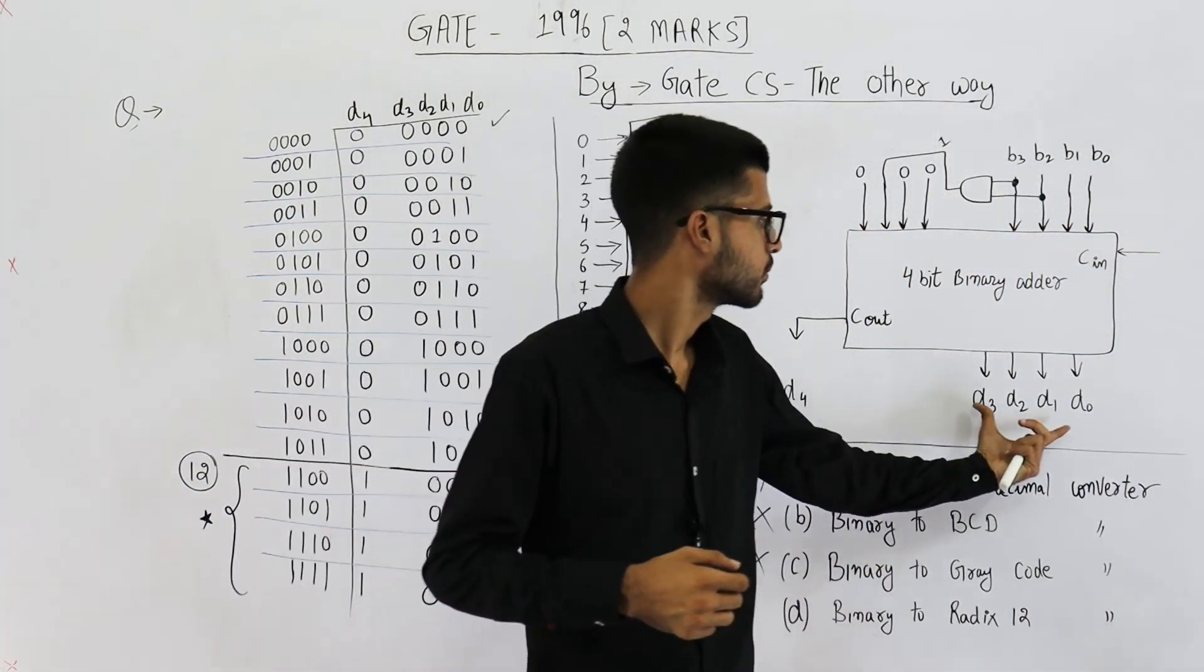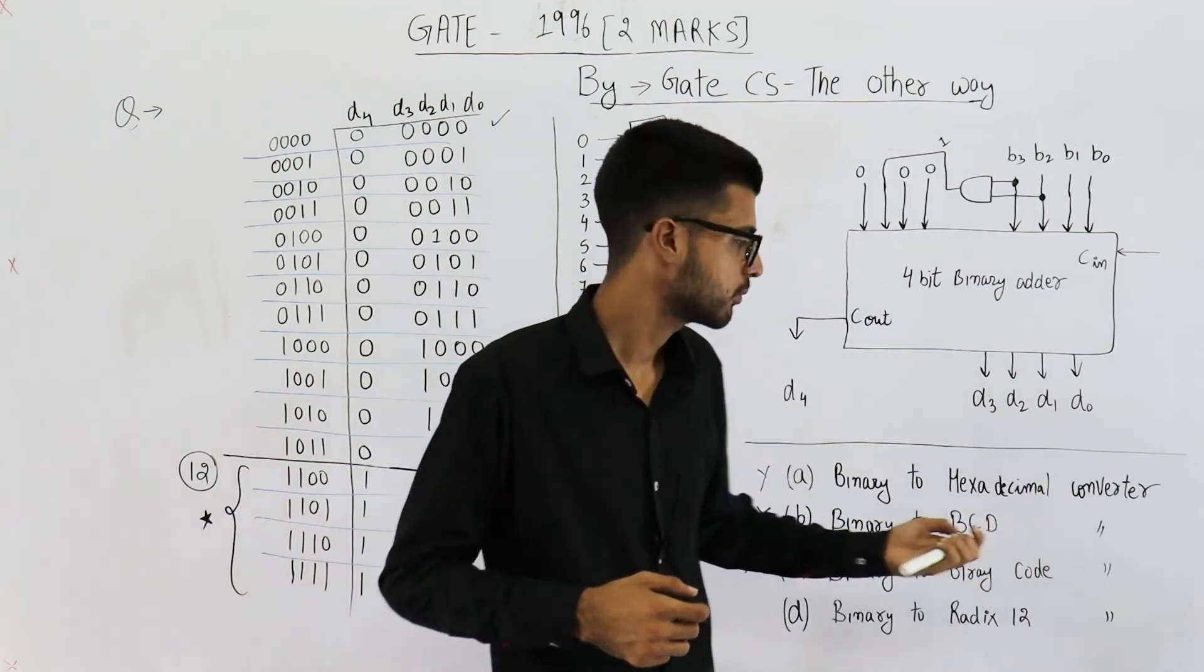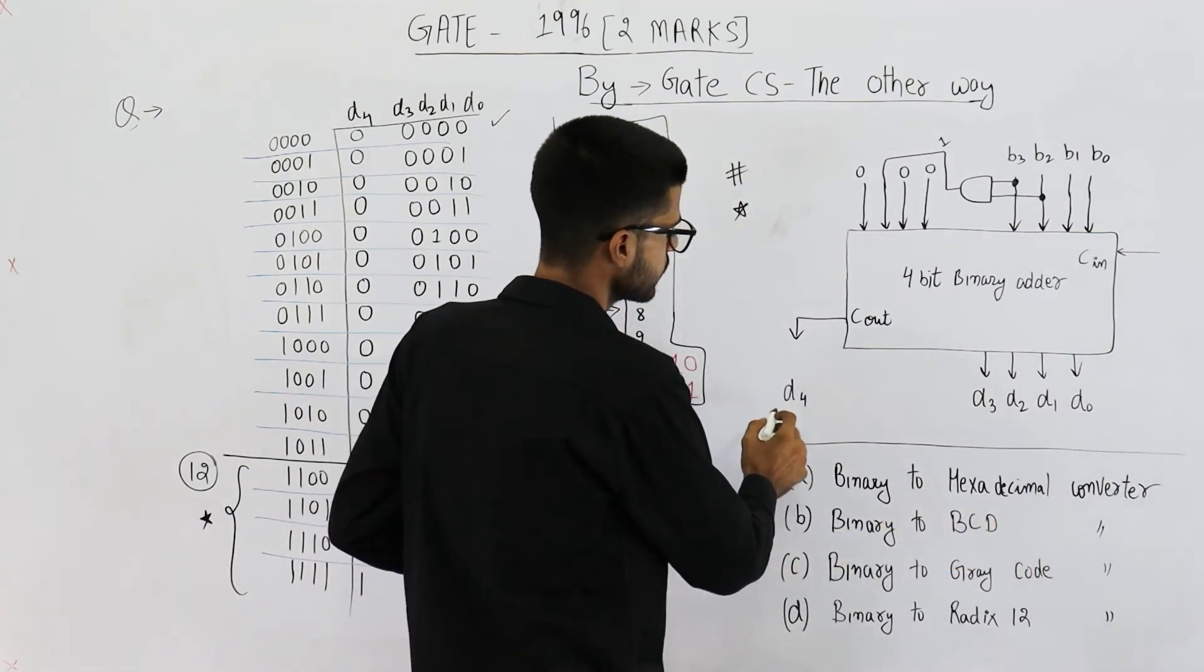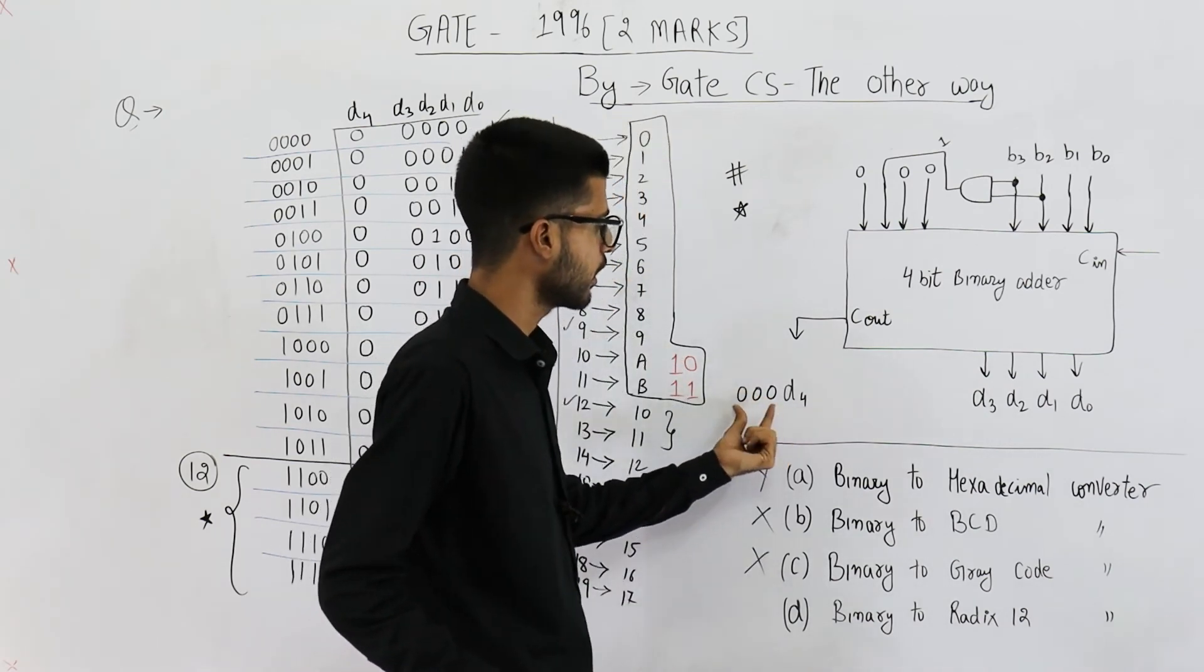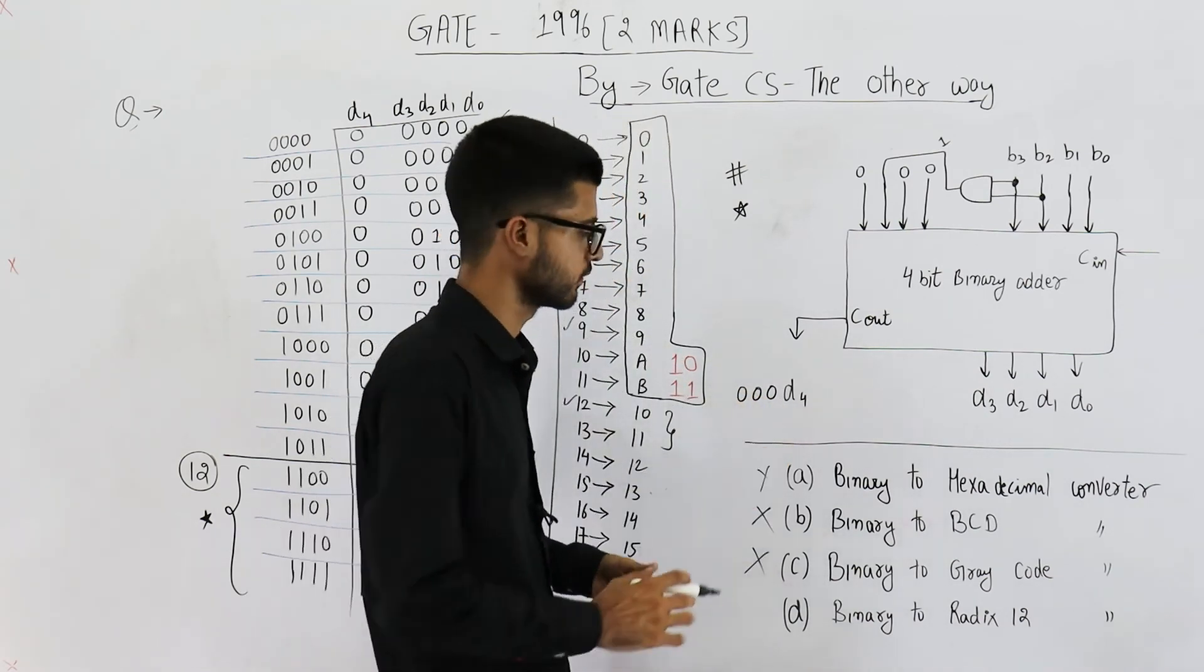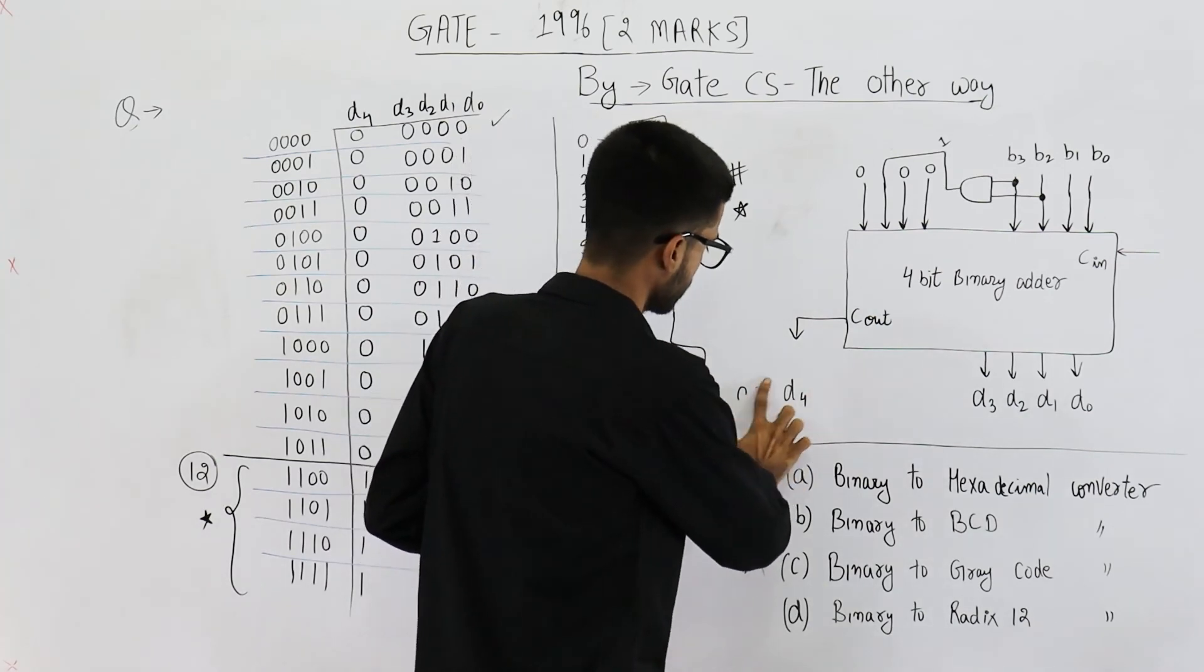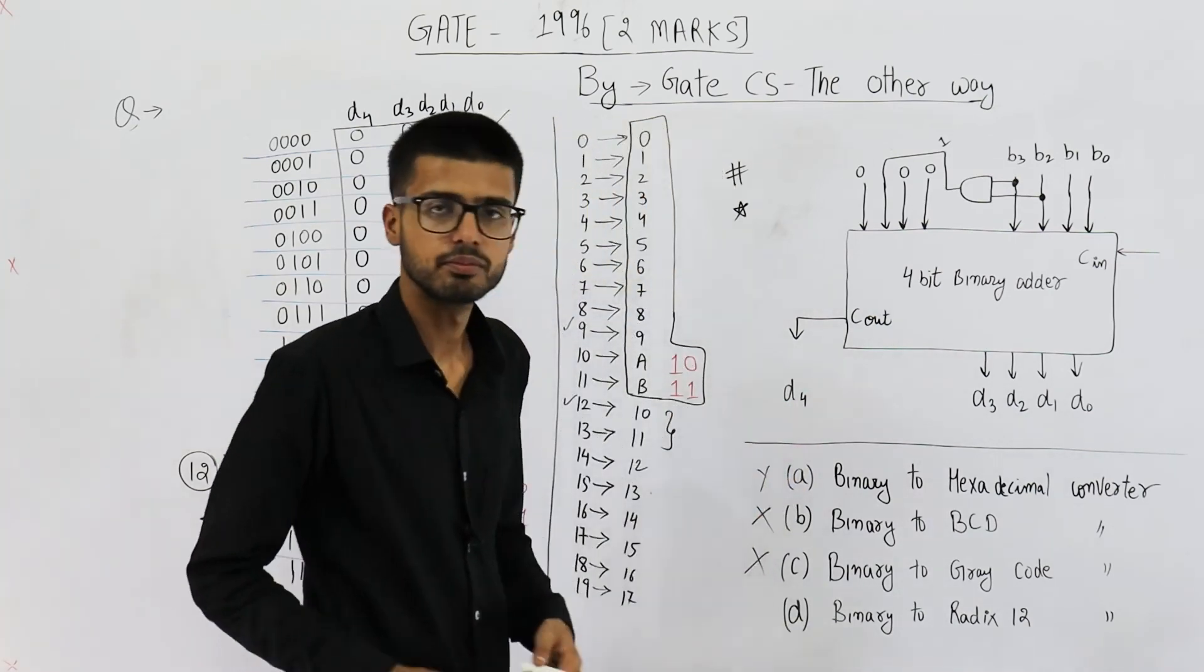That's the reason they're trying to combine these four bits and they're interpreting it as one base 12 number. This one is representing one base 12 number and this one is also representing one base 12 number. It is actually a four bit number out of which first three bits are always zero. So answer is option D.